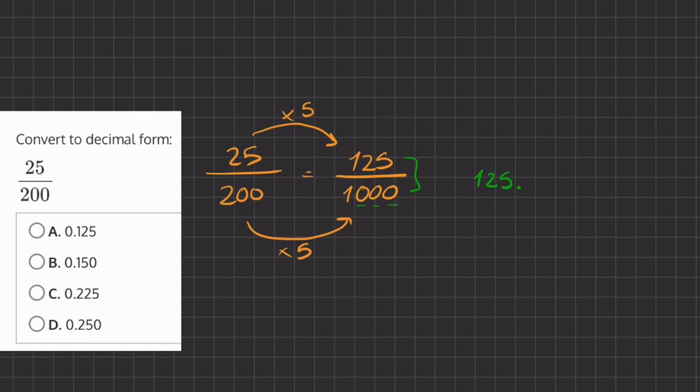So because we have three zeros after the 1, we're going to move this decimal place three times to the left. So our decimal is actually going to be 0.125 and this 0.125 is equivalent to 25 divided by 200.